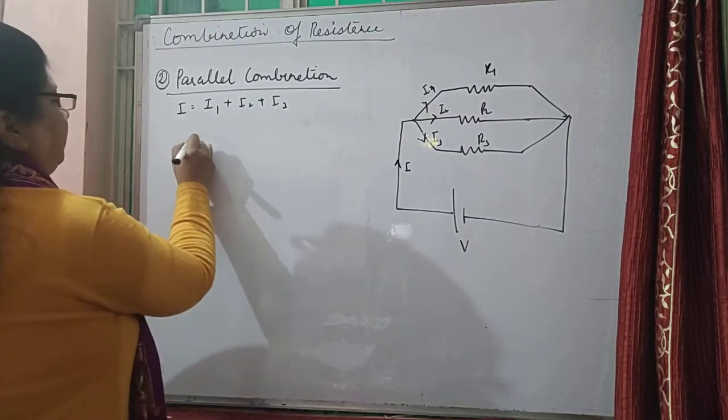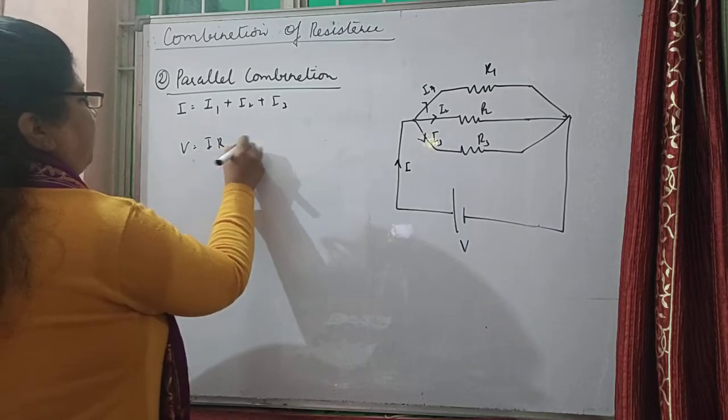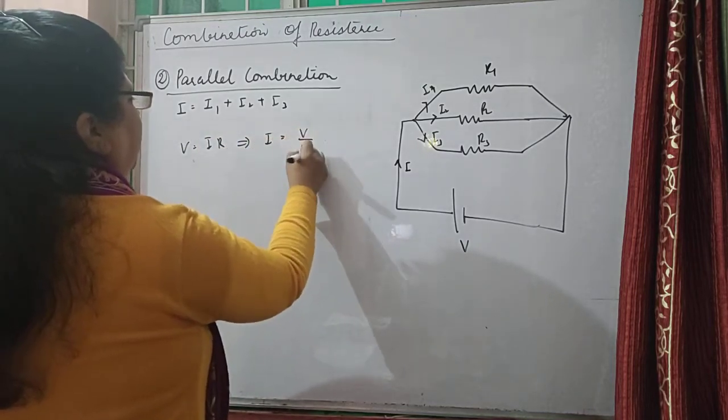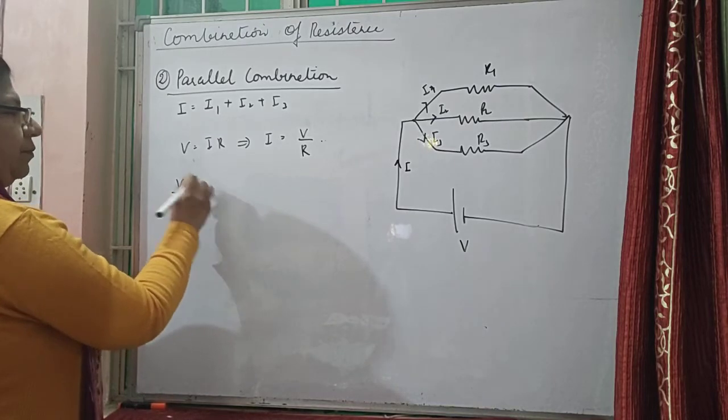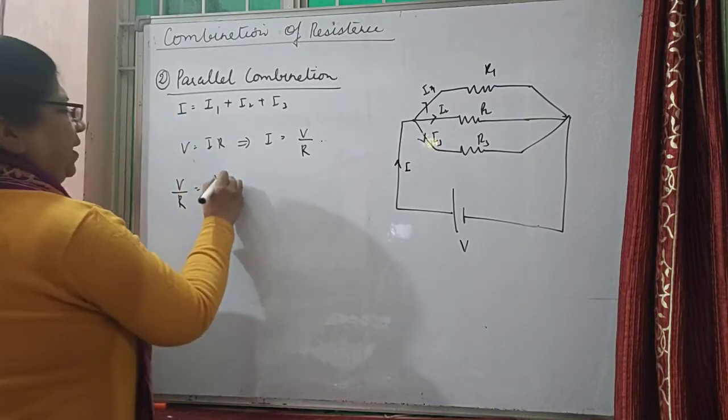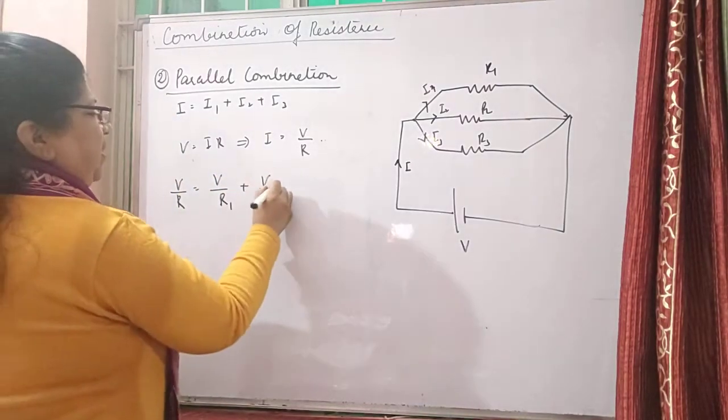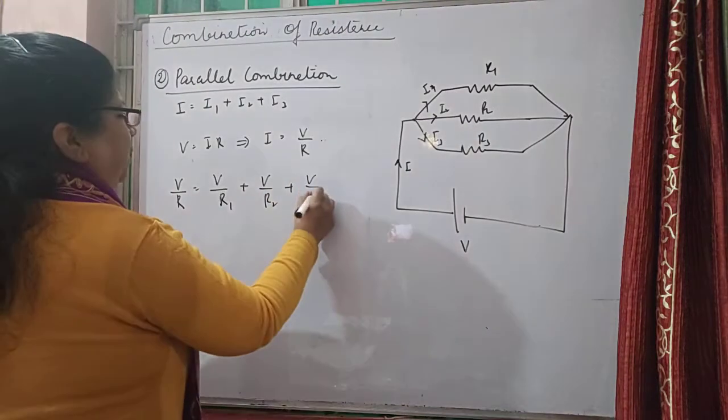According to Ohm's law, we have v is equal to i times r, which implies that i is equal to v upon r. So we can write i as v upon r equivalent, or i as v upon r1, v upon r2, and v upon r3.